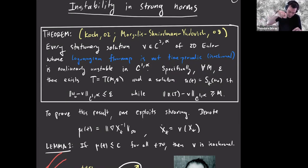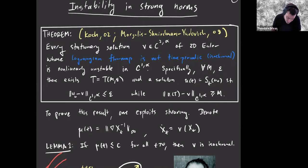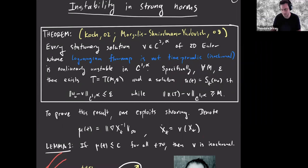To prove this result, you exploit the shearing that the stationary state has. The fact that the Lagrangian flow map is not time-periodic means: if you put dye in your fluid, the fluid may mix it up, but it's not the case that at a later time the dye returns to itself. All the orbits don't have the same period. If they don't all have the same period, you can be in a region where nearby orbits have slightly differing periods, and that creates a shearing — particles on nearby orbits grow apart. And you're still L2 stable; this is really a statement about roughening of the solution.